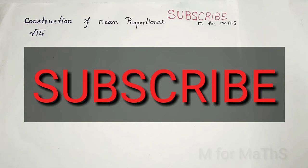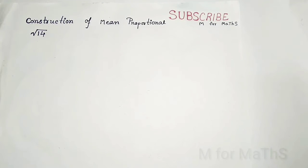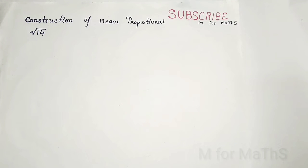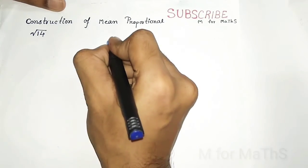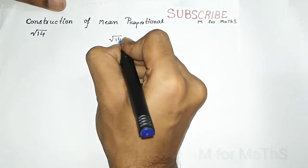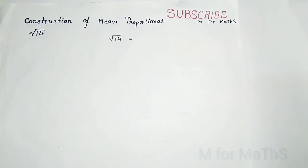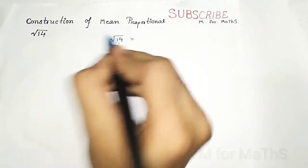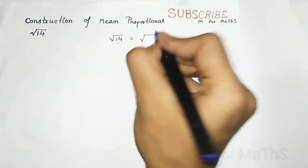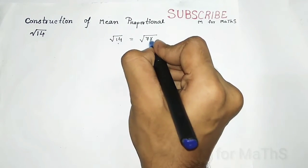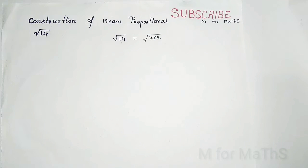Here I am showing you a construction for root over 14. In further videos I will try to show more difficult constructions within this chapter. First of all, before starting, we have to write the number inside the root as the product of two different numbers. So 14 you can write as 7 × 2.